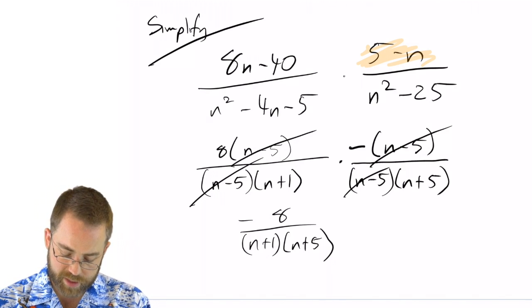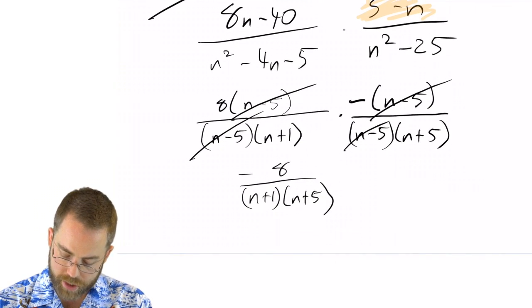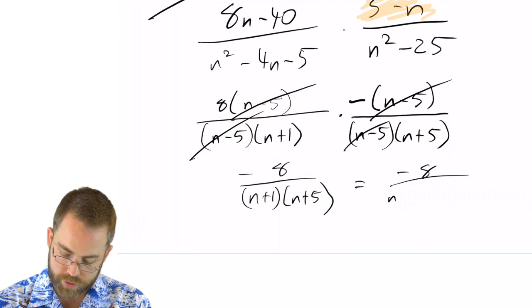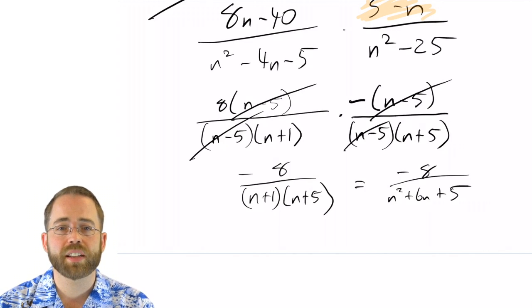And for completeness's sake, I should probably multiply that out, but I can see that nothing's going to cancel. That adds to 6 and multiplies to 5. And that's as good as it gets.